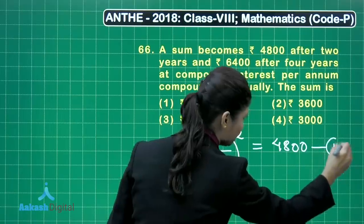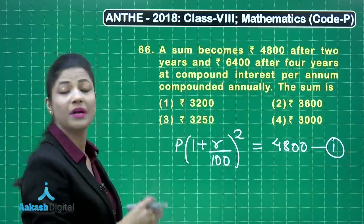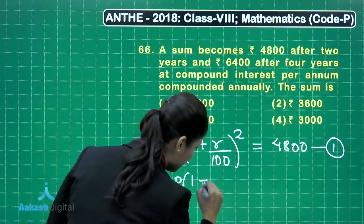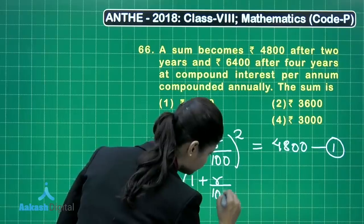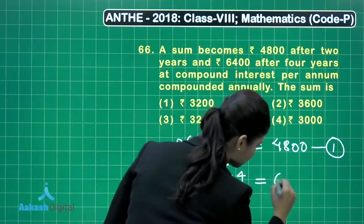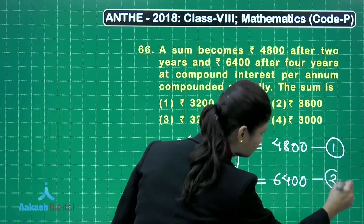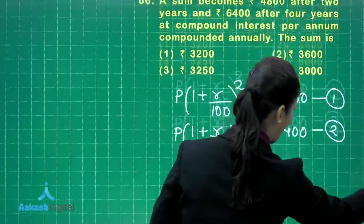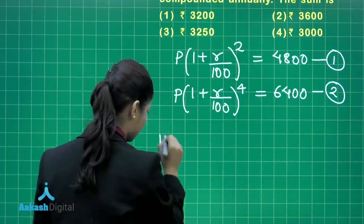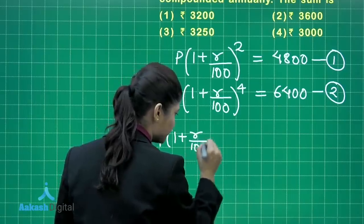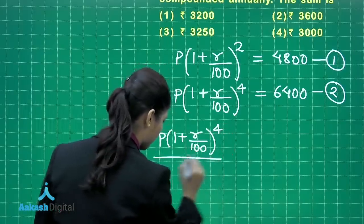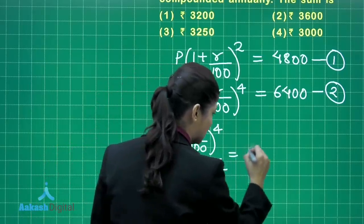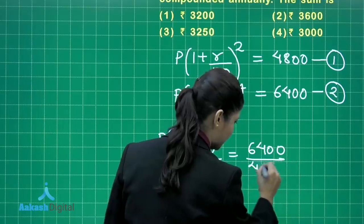From the second condition — the sum becomes 6400 after 4 years — we get: p × (1 + r/100)⁴ = 6400. Let this be equation 2. Now divide equation 2 by equation 1: p(1 + r/100)⁴ divided by p(1 + r/100)² equals 6400 divided by 4800.